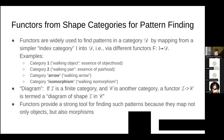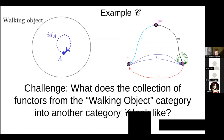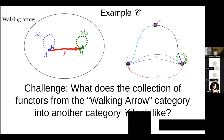Functors provide strong tools for finding patterns in a target category because they map morphisms. Take the walking object category with its identity morphism: there are functors mapping it to various target objects. The single object has to go to a particular target — it can't go simultaneously to A and B, but could go to A, B, or C. And the identity morphism on A must map to the identity morphism on the image of A.